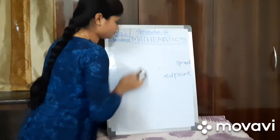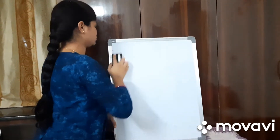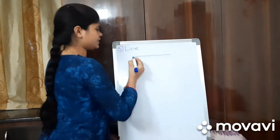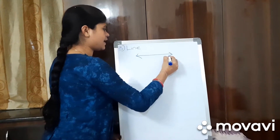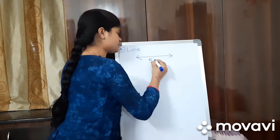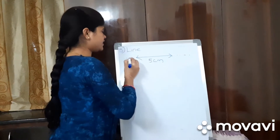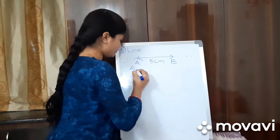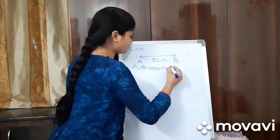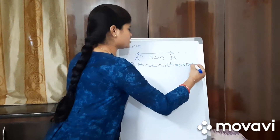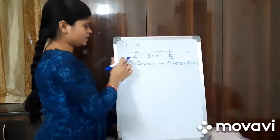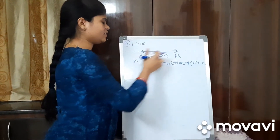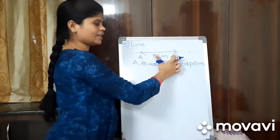The third one is a line. A line is a straight line which has an arrow at the starting and at the end. If for example this line is 5 centimeters, we can extend it towards the right and towards the left. That means points A and B are not fixed points. Line has no fixed points, while a line segment has two fixed points and we cannot extend them. But a line can be extended in both directions.